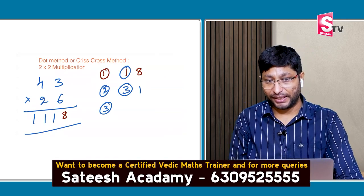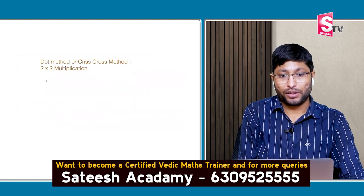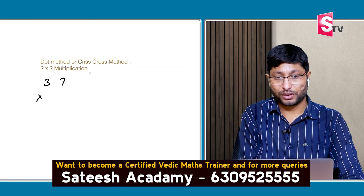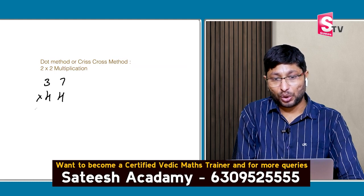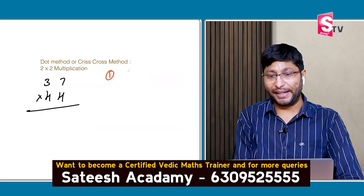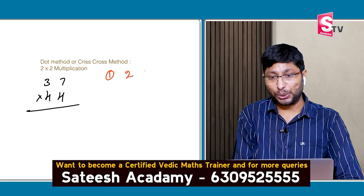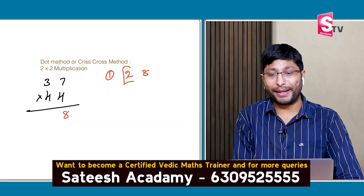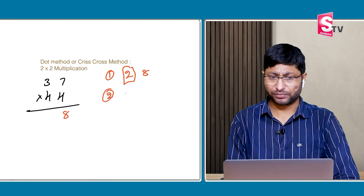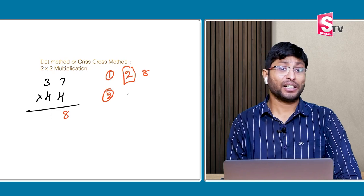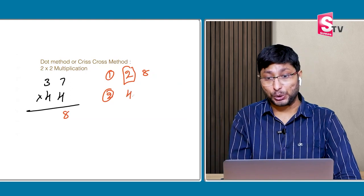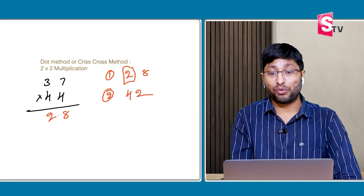Next: 37 multiplied by 44. Step 1: 7 fours are 28. Write down the 8 and 2 will be carry. Step 2: 4 twos are 8 — wait, 4 threes are 12, and 7 fours are 28. 28 plus 12 is 40, plus 2 carry is 42. Write down the 2, and 4 will be carry.